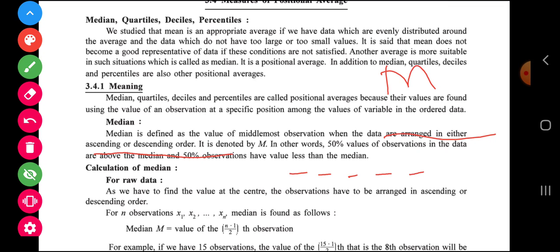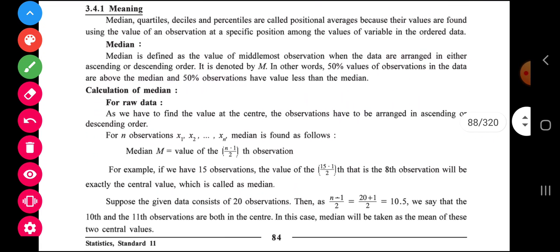say for example, we have 5 data, then the middlemost value is called median. So median indicates 50% datas are above that value and 50% datas are below this value. Now how to calculate median for ungrouped data? Very simple formula that median is equal to N plus 1 by 2th observation.